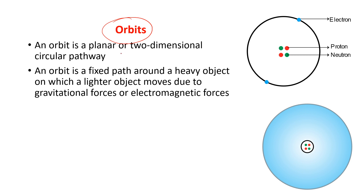So what is meant by orbit? Orbit means it is a planar or two-dimensional circular path. Two-dimensional means if I draw a diagram on the board, you cannot see it in a three-dimensional way — you cannot see what is behind the diagram. That is known as two-dimensional. Here also, the electrons are said to be revolving in the orbits in a two-dimensional way, but actually this is not true.